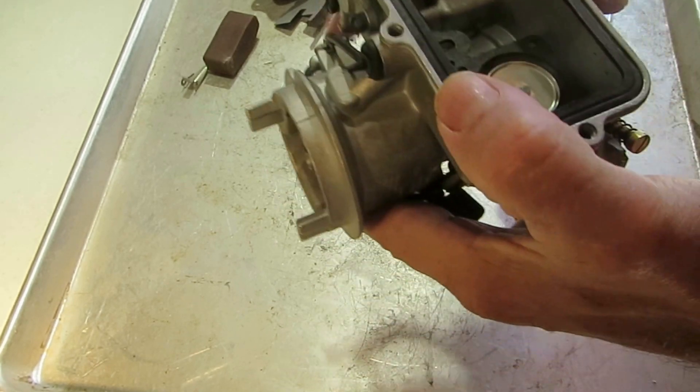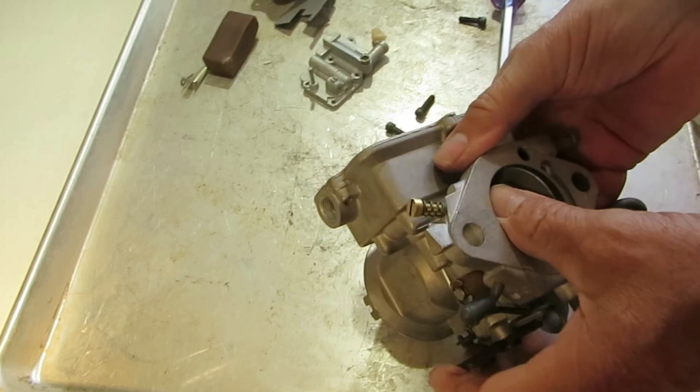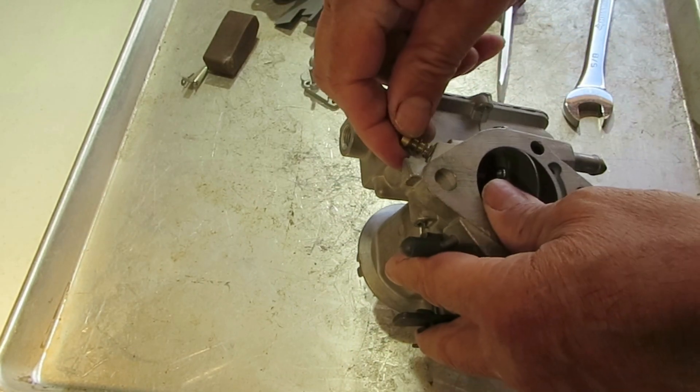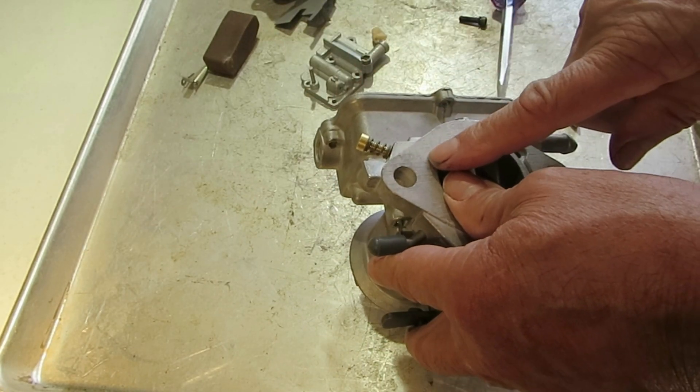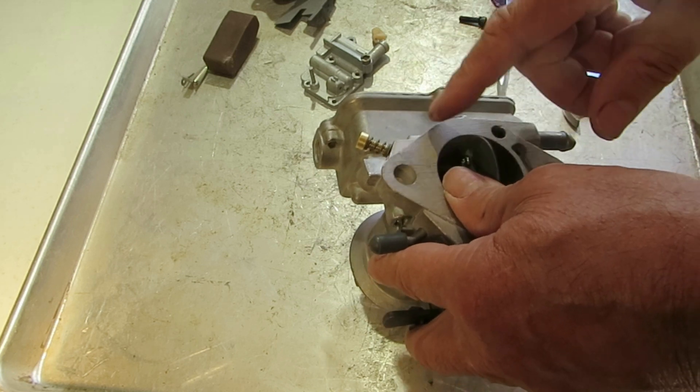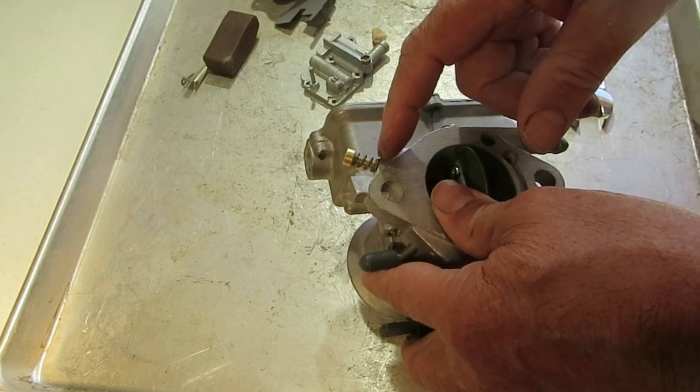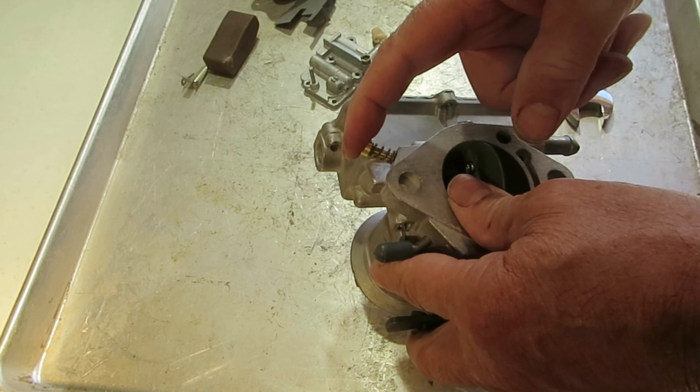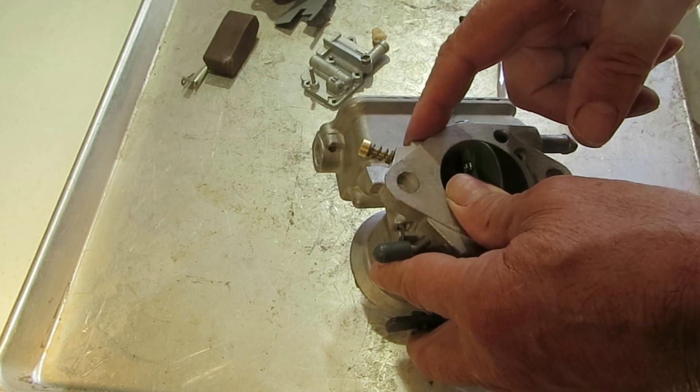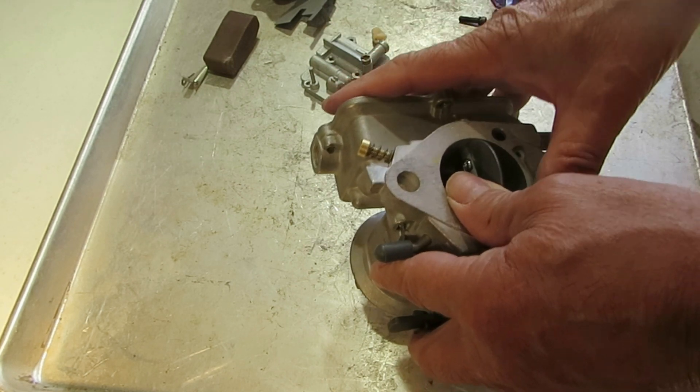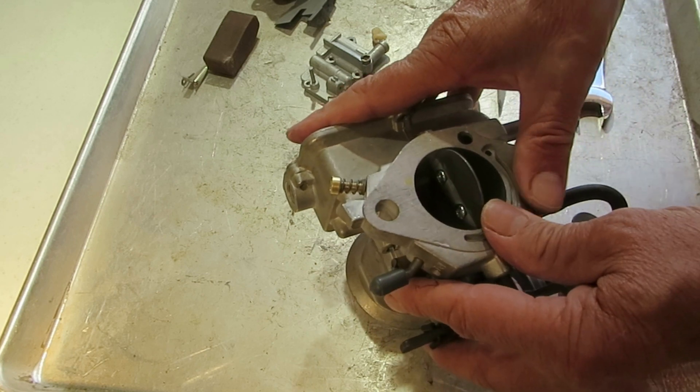Okay, now the idle mixture screw on the bench here, you put it in, turn it in all the way until it seats gently—if you push too hard you're going to score the idle screw—and then turn out a turn and a half, and then do your regular adjustment after it's on the car, engine warmed up at idle speed.